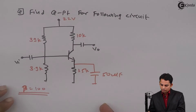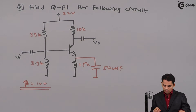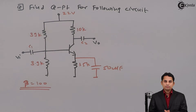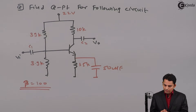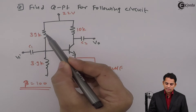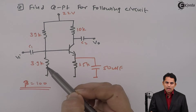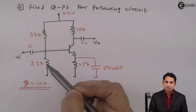Hello students. Now we will try to find out the Q point for a voltage divider bias circuit. Let's see the first problem based upon voltage divider bias. In the problem, they have given us to find out the Q point of the following circuit. We can clearly see that it is a voltage divider bias circuit in which biasing resistors R1 and R2 are used to divide the voltage at the base.